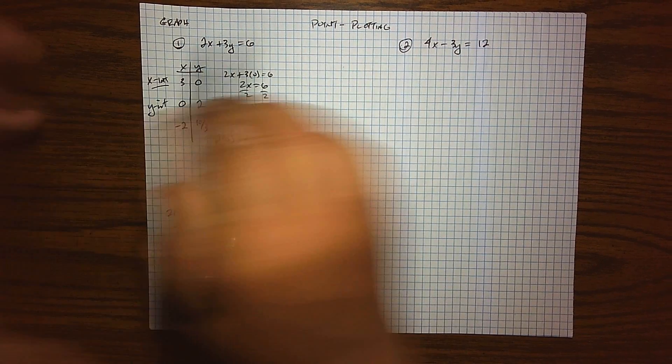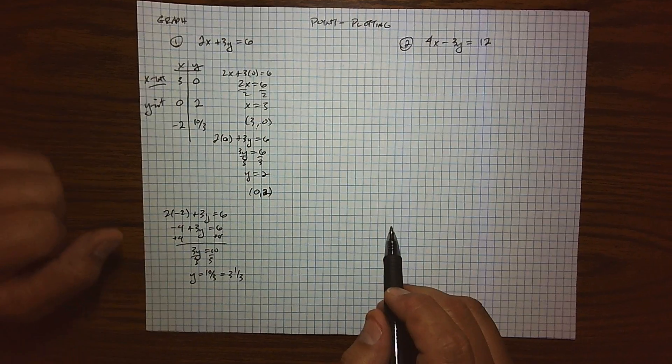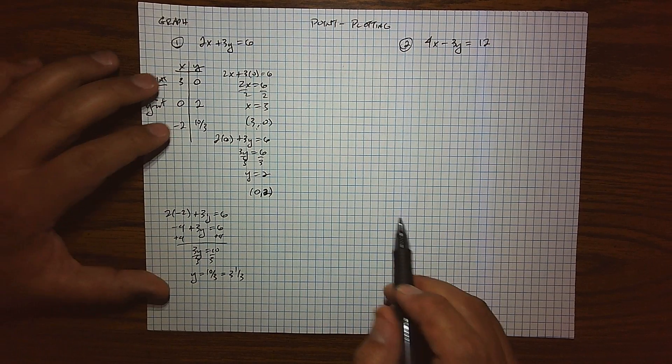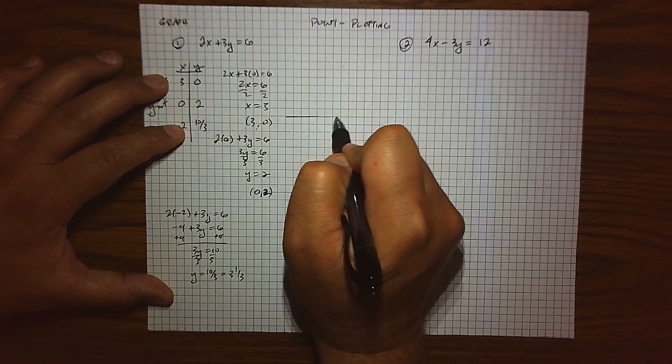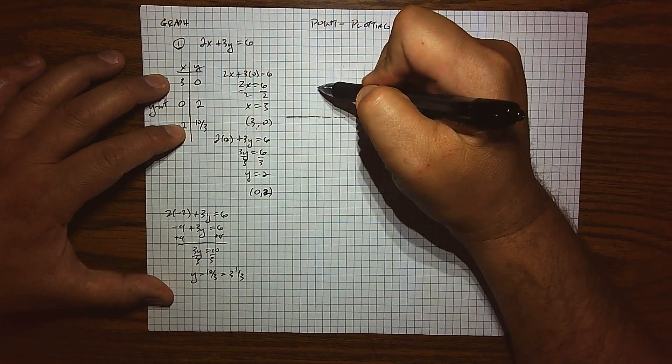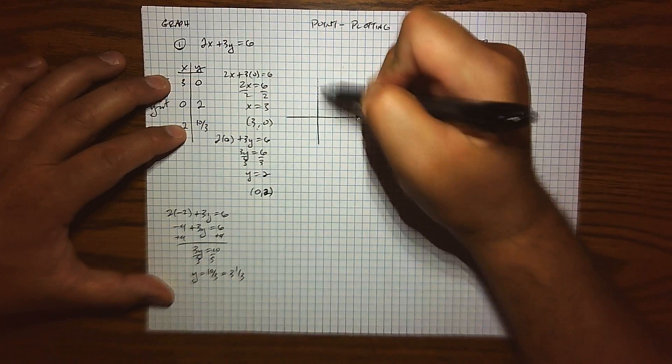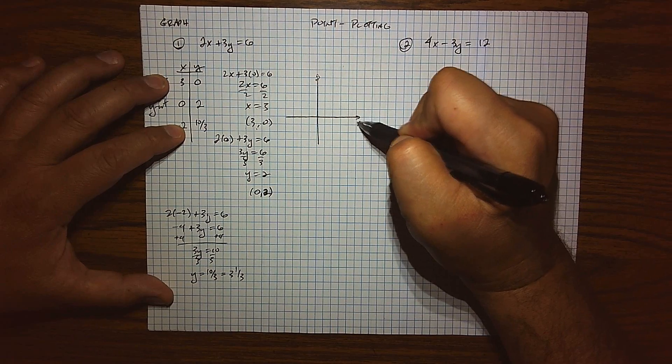Where's the rest of the solutions? We found three of them. We know there's an infinite number. Well, that's where the graphing kicks in. So I'll create a nice looking little grid. There's my y-axis and here's my x-axis.